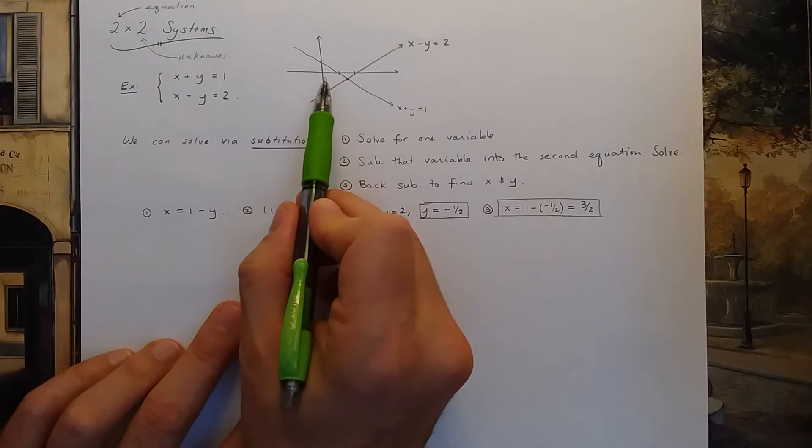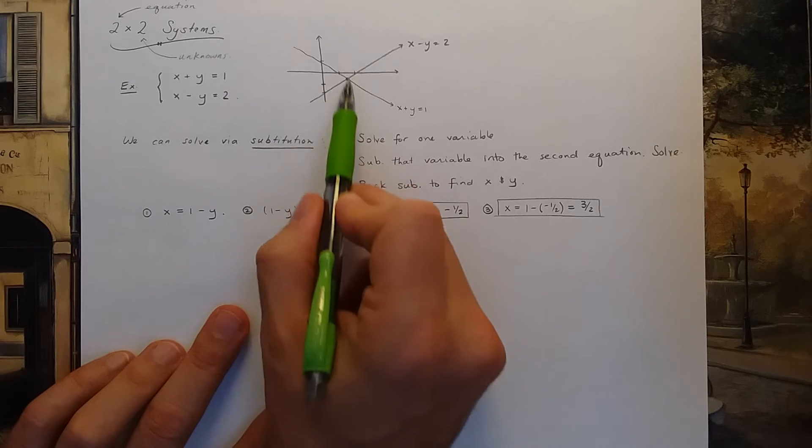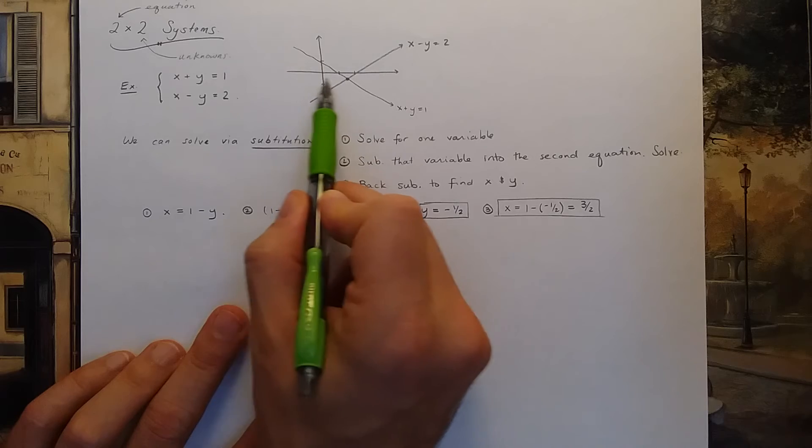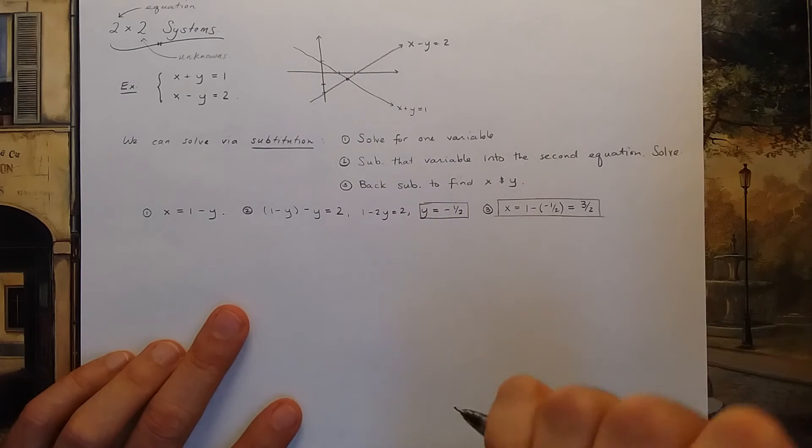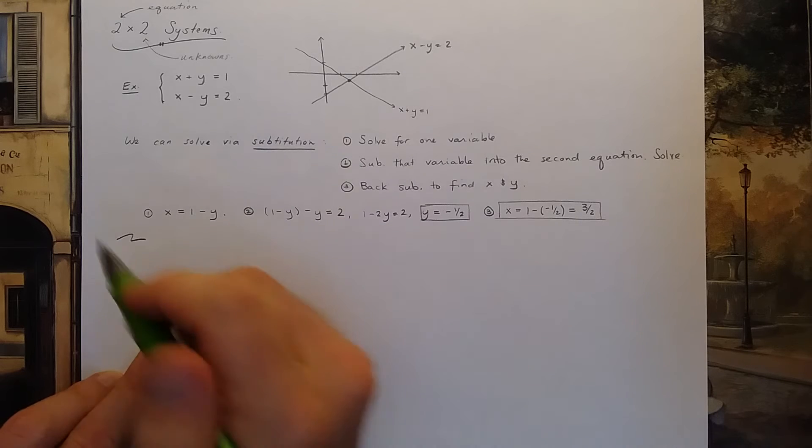So now I know x and y. This kind of matches my picture. It does appear that over at 1.5 or 3 halves, my x coordinate lies, and y seems to be in about negative 1 half. So that's one method on how to solve a 2 by 2 linear system.